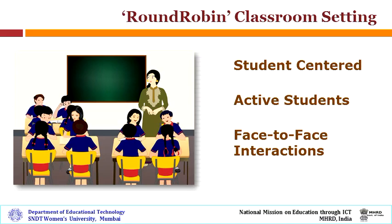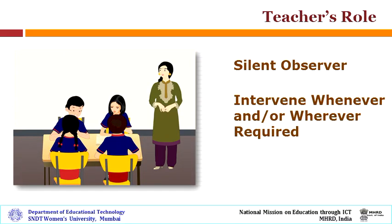She also needs to explain the roles students need to play while working in the Round Robin group. During the Round Robin activity, the teacher moves around observing the students' interactions and witnessing the flow of their ideas or answers. The teacher may note down observations for further use.